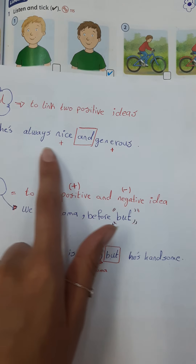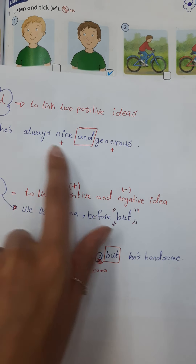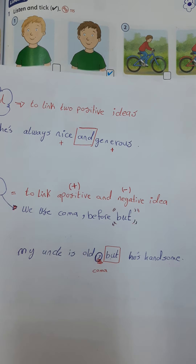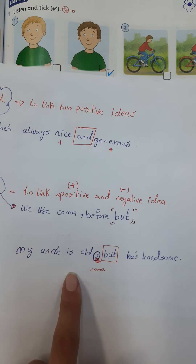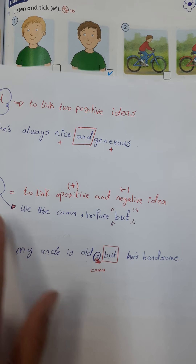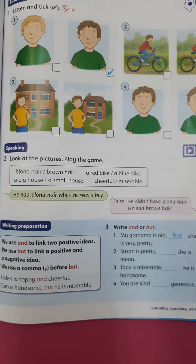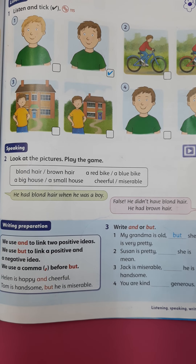In sentences with 'and,' you never use a comma. But when you use 'but,' you must always use a comma in the sentence. This is the explanation of 'and' and 'but.'